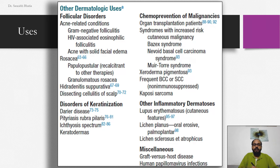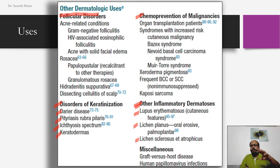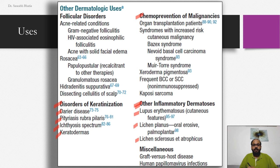Other non-FDA-approved uses include follicular disorders, disorders of keratinization like Darier's disease, PRP, ichthyosis, keratodermas, chemoprevention of malignancies, and other inflammatory disorders like lupus erythematosus and lichen planus — where retinoids are used more as anti-inflammatory drugs.